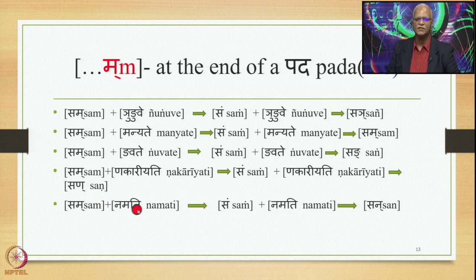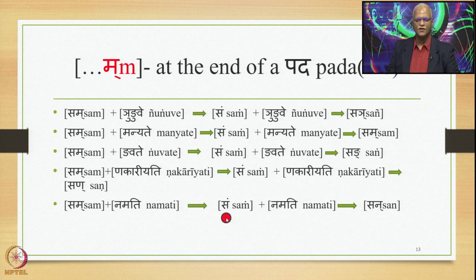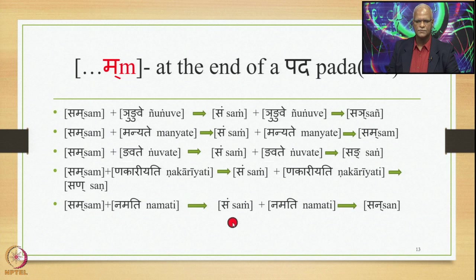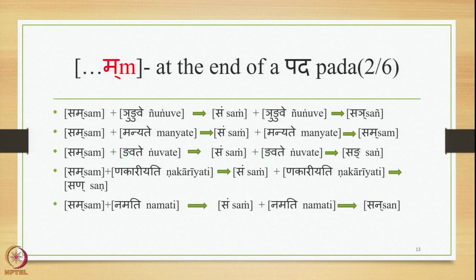Sam plus Namati: Ma is substituted by Anuswara by 8.3.23, giving Sam Namati. Then by 8.4.59, the Anuswara is substituted by the nasal Parasavarana, which in this case is Na, giving Sam Na Namati.